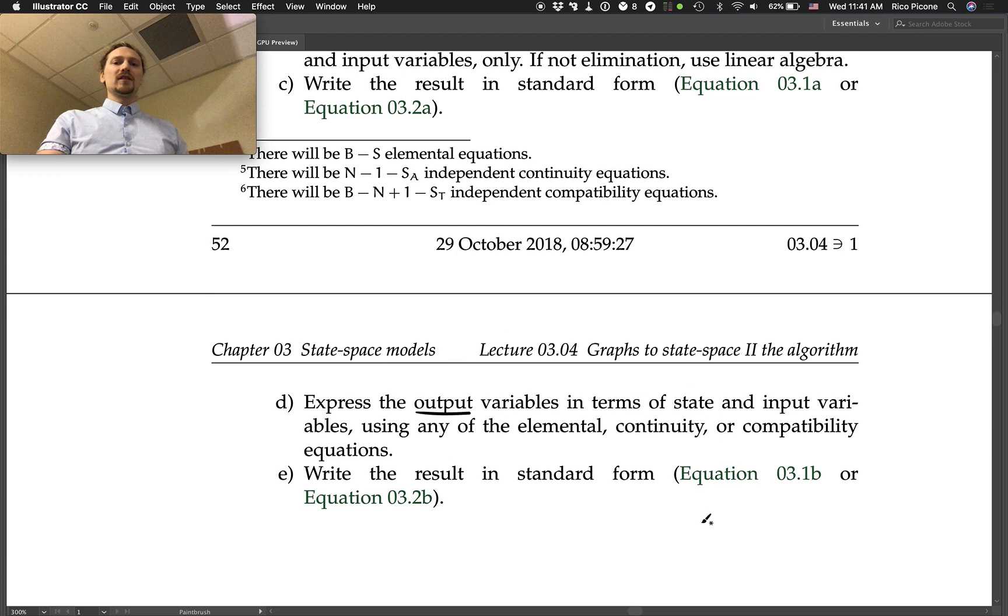Express the output variables in terms of state and input variables using any of the elemental, continuity, or compatibility equations. Oftentimes you want an output variable that you've already solved for during your elemental, continuity, or compatibility equations, so you don't need to start from scratch. Finally, write the result in the standard form of the output equation. Equation 3.1b is the non-linear or general output equation, and 3.2b is the linear time-invariant form of the output equation.